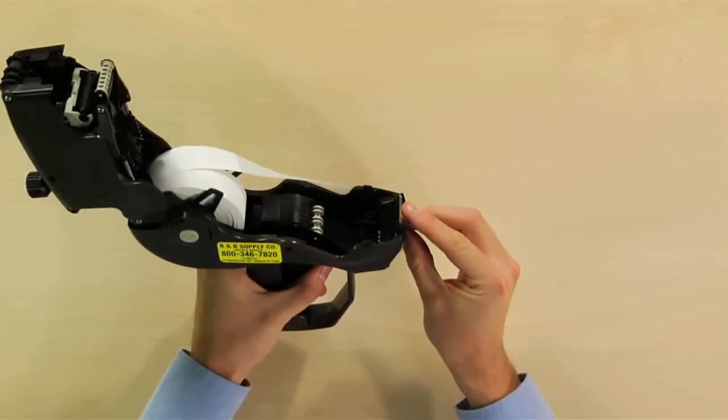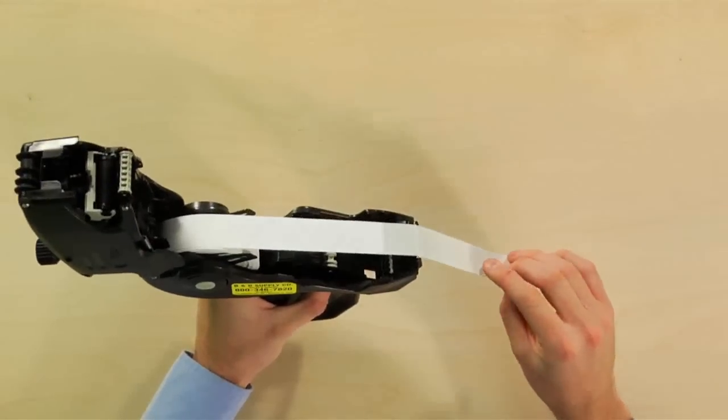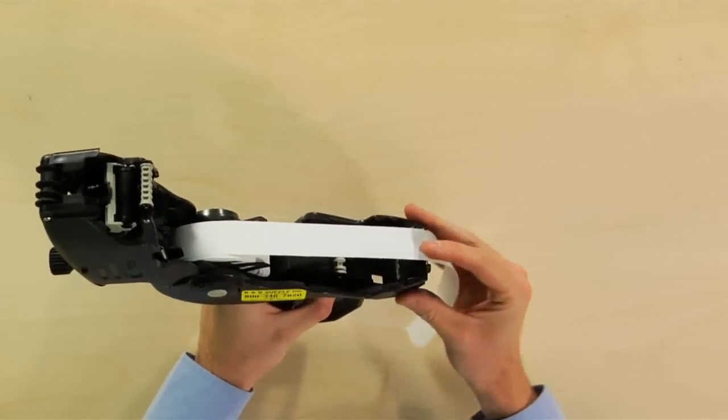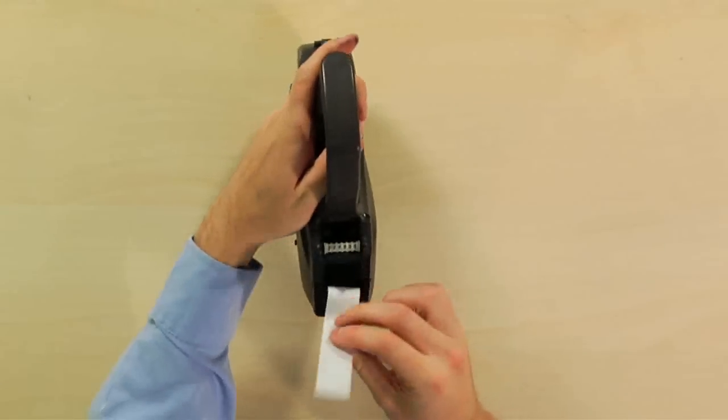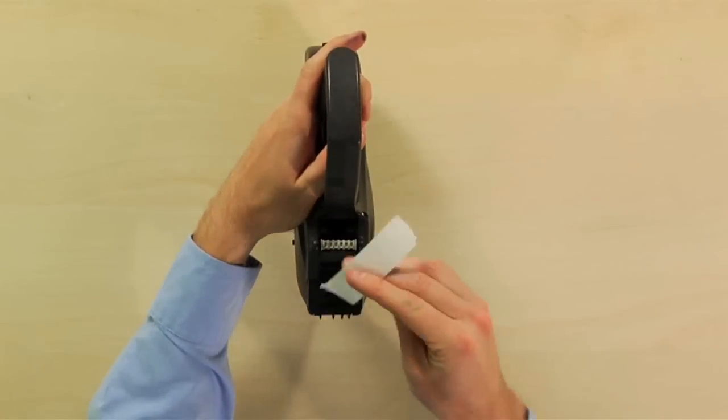Then, pull and drape your backing paper over the peel bar and close the gun. Flip the Monarch 1152 and covering the white roller, feed the backing paper into the opening.